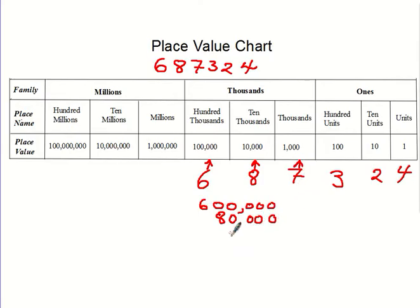The seven is not a seven, the seven is 7,000. The three is not a three, it's 300.